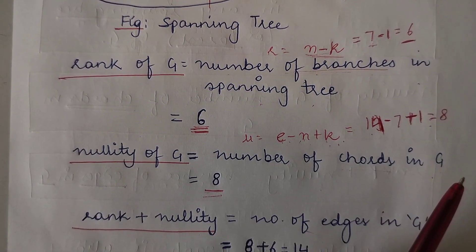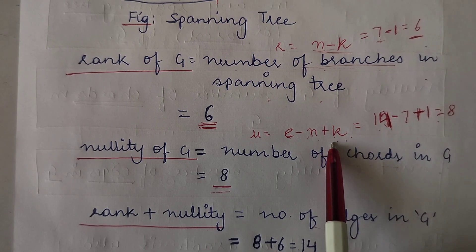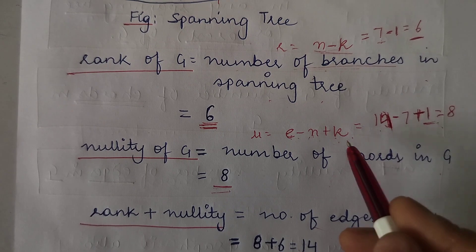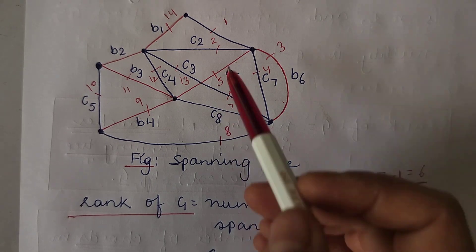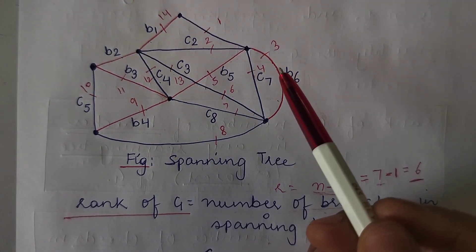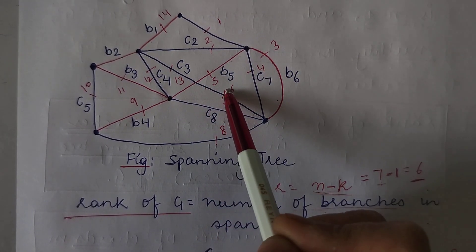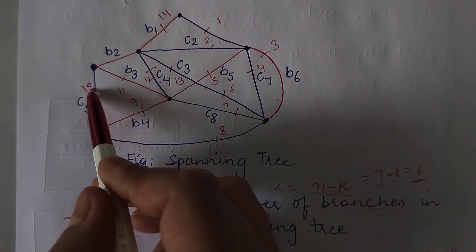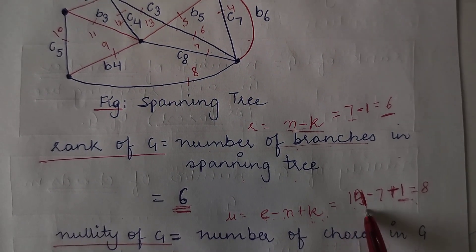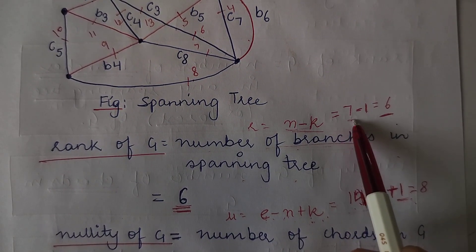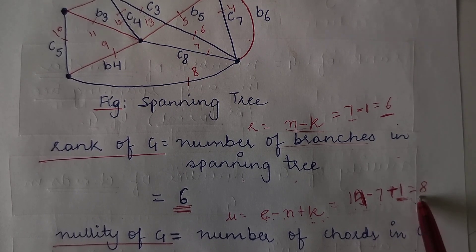Similarly, to find the nullity using the formula E minus N plus K: since this is a connected graph, K equals one. The total number of edges in this graph are 14, and the number of vertices is 7. So 14 minus 7 plus 1 gives 8. That is one way using the formula.